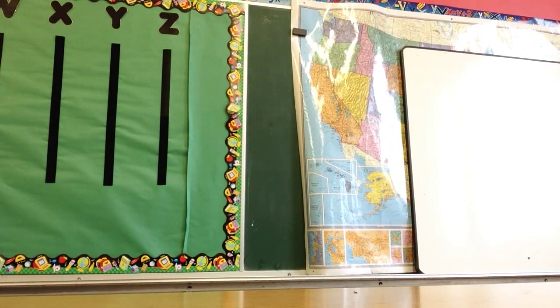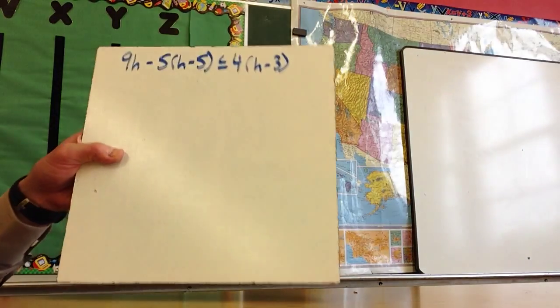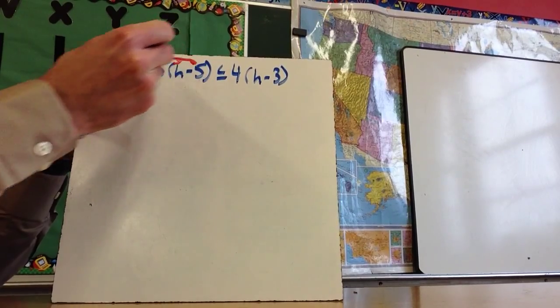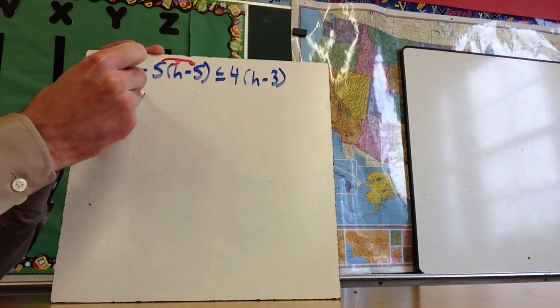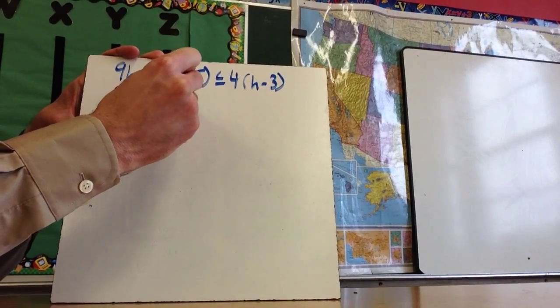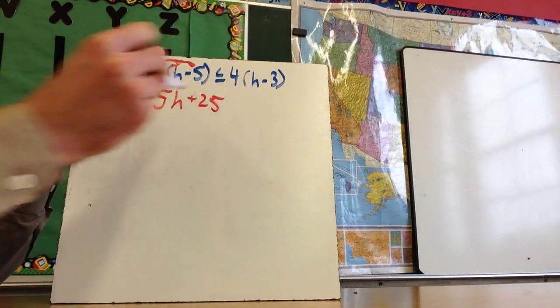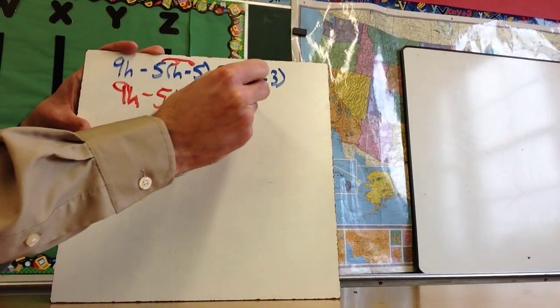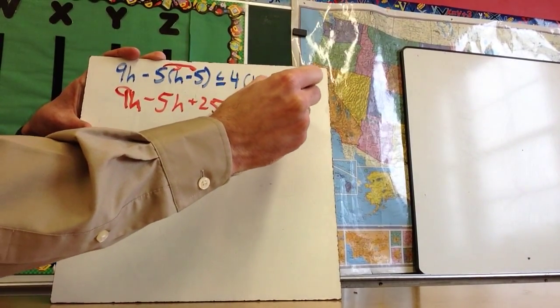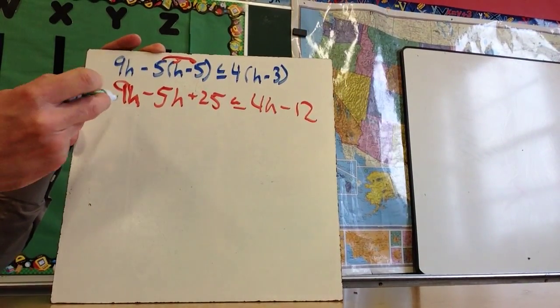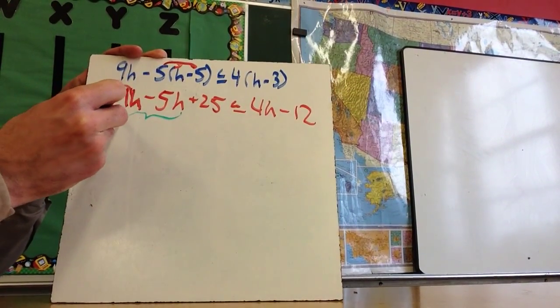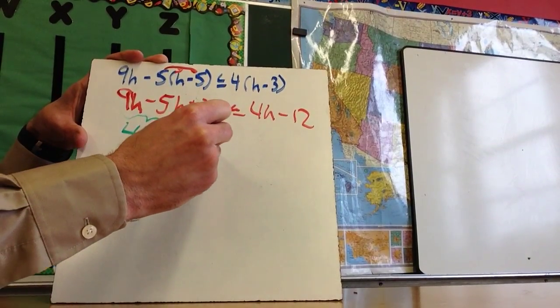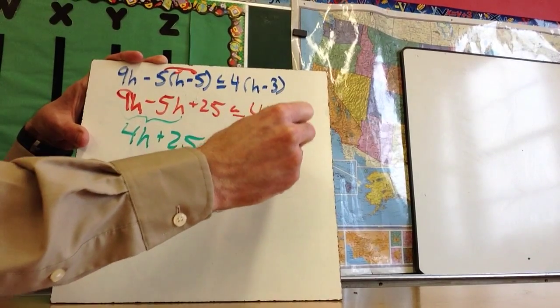Now let's talk about a couple of special circumstances. So we'll start with this one. The first thing I've got to do is the distributive property. So this is going to become 9h, it's an h minus 5h, plus 25, -5 times -5 is positive 25, less than or equal to 4h minus 12. And I'm going to take these like terms and combine them. So I now have 4h plus 25 greater than or equal to 4h minus 12.